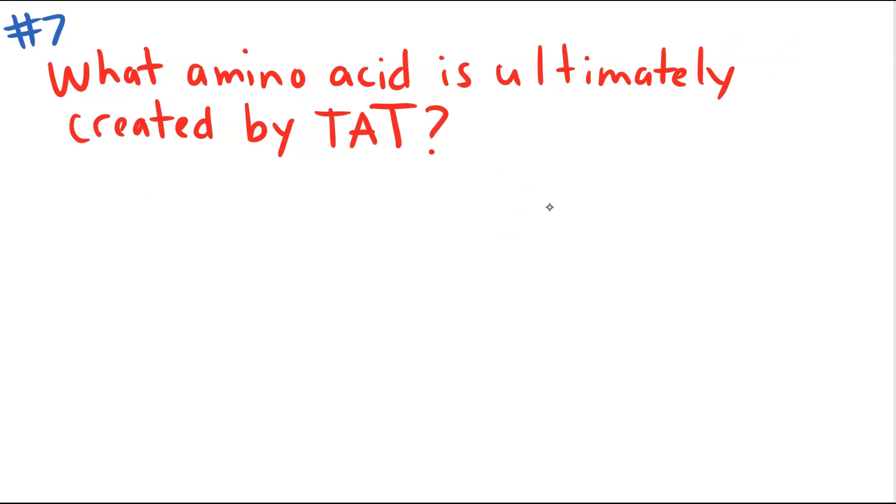What amino acid is ultimately created by TAT? Some of you may have looked at this and thought, well, does he mean DNA or RNA? But what I want you to really get thinking about is that if there are T's in there, that has to be DNA. That can't be RNA. So this is a two step forward problem. So if your DNA is TAT, you have to transcribe it into RNA, which would be AUA. And then to get to the final answer, which is asking you about the amino acid, you would have to translate AUA into isoleucine. Single letter abbreviation I.